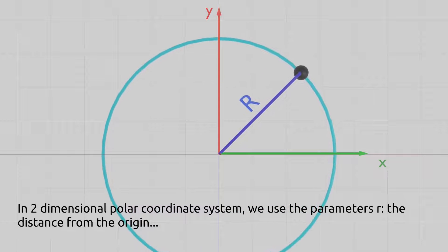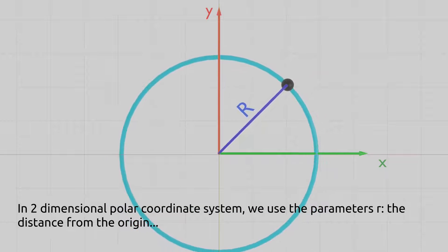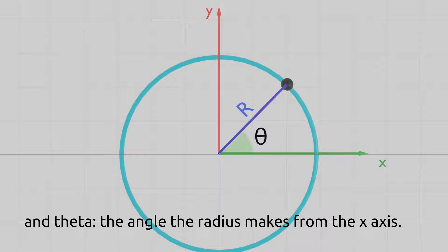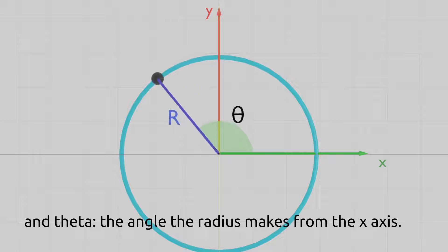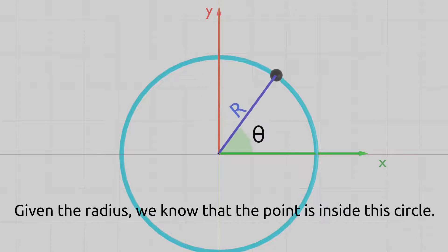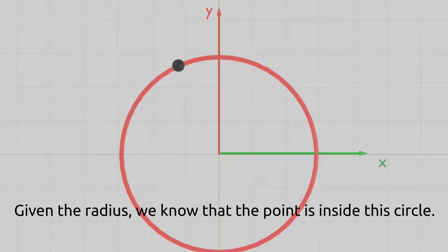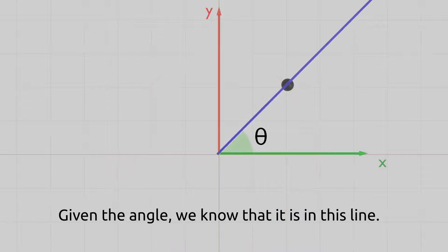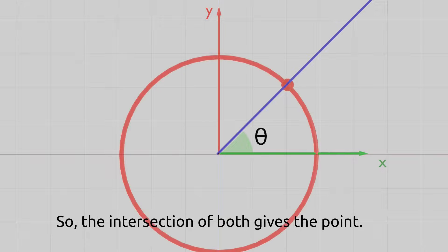In the two-dimensional polar coordinate system, we use the parameters r, the distance from the origin, and theta, the angle the radius makes from the x axis. Given the radius, we know that the point is inside this circle. Given the angle, we know that it is on this line. So the intersection of both gives the point.